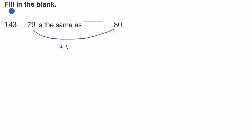And so if we want the difference to be the same, we would add 1 to the 143 as well. So 143 plus 1 is 144. If we add 1 to both of these numbers, the difference would be the same. So it's 144 minus 80, and we're done.